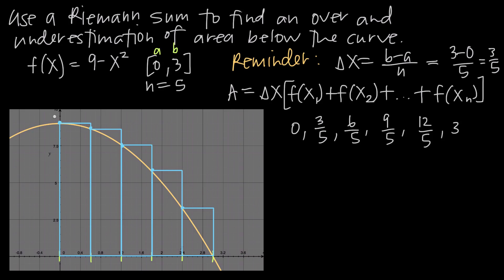Because we're using left endpoints for the overestimation, the x-values where the rectangles meet the graph are x equals 0, x equals 3 fifths, x equals 6 over 5, x equals 9 over 5, and x equals 12 over 5. We would not use x equals 3 for the overestimation using left endpoints.